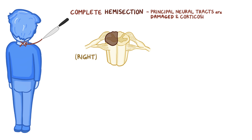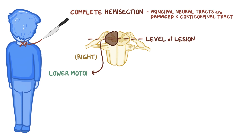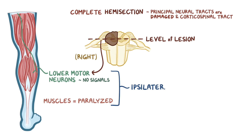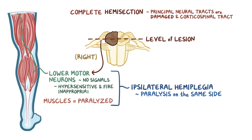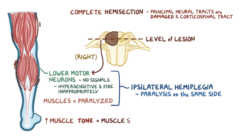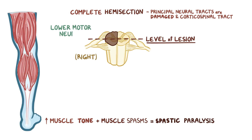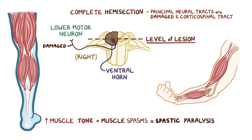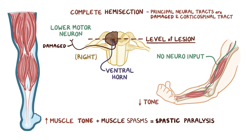Damage to the right-sided corticospinal tract means that, below the level of the lesion, the lower motor neurons — like those going to the legs — are no longer receiving signals from the upper motor neuron, so the muscles they control become paralyzed. This is called ipsilateral hemiplegia, or paralysis on the same side. Interestingly, these neurons become so starved for stimulation that they become hypersensitive and start firing inappropriately, causing increased muscle tone and muscle spasms — so we call this spastic paralysis. Meanwhile, at the level of the lesion, the lower motor neuron of the right ventral horn will also be damaged, meaning the muscles they innervate will receive no neural input at all — they go limp and decrease in tone, which is called flaccid paralysis.